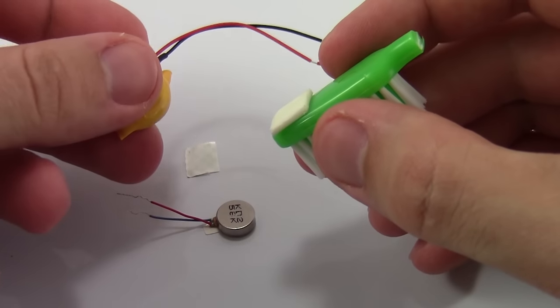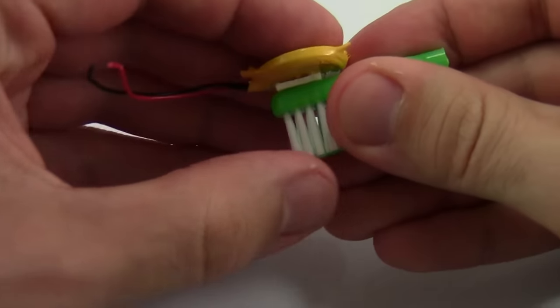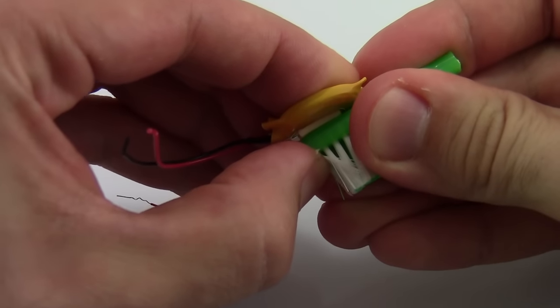Next, take your coin cell battery and place it on top of the double-sided foam tape. Again, press down firmly to make sure it sticks.